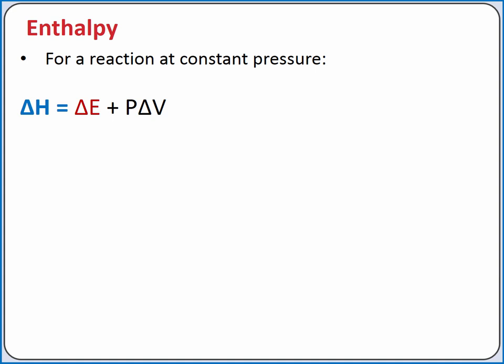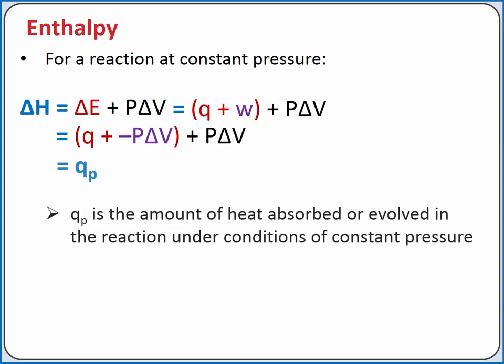The change in enthalpy is equal to the change in internal energy plus the pressure times the change in volume. We can substitute in our definition for the change in internal energy, which equals heat plus work. Then we can substitute in our definition for pressure volume work, which is equal to negative pressure times change in volume. Our pressure times change in volume cancels out, and we're left with just change in enthalpy equals heat at a constant pressure.